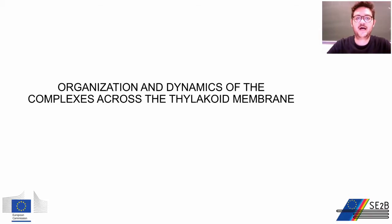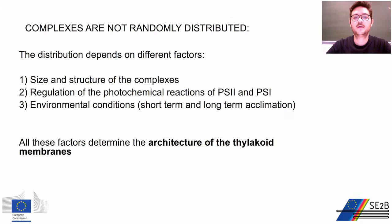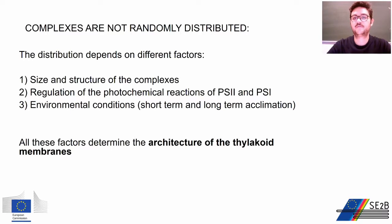In this section we will see how the complexes are distributed in the thylakoid membrane and why. When we talk about the photosynthetic apparatus, we refer mostly to the main complexes of the thylakoid membrane: PS2, PS1, light harvesting complexes, cytochrome B6F, and ATP synthase. Those complexes are not arranged in the thylakoid membrane randomly. Their distribution is related to their structure, their mechanism, and external factors like environmental conditions.